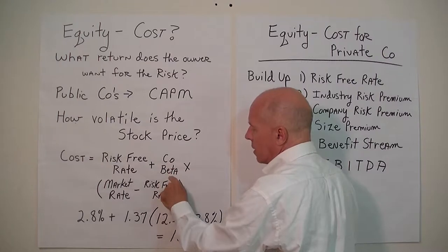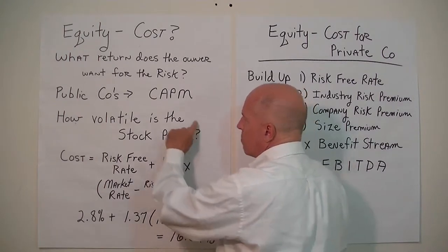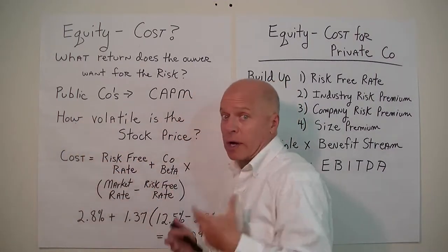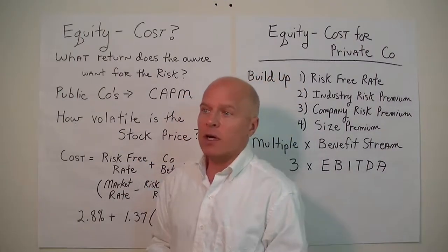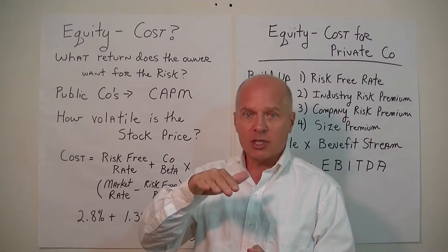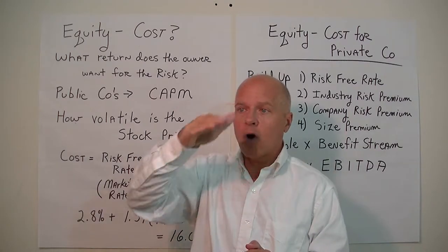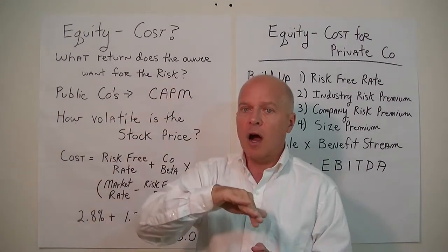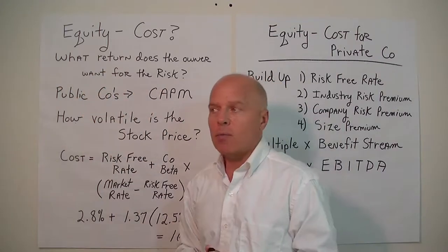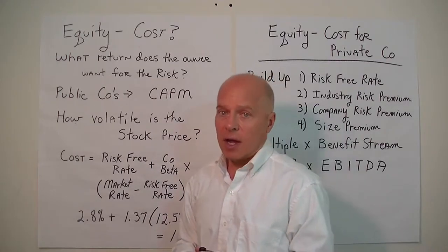How we measure the volatility of the stock price is a function of the beta coefficient. If a company's stock moves exactly with the marketplace — such as the Standard & Poor's 500 — so as the overall marketplace goes, our company's stock continues to move exactly with the market, that would be a beta coefficient of 1.0.